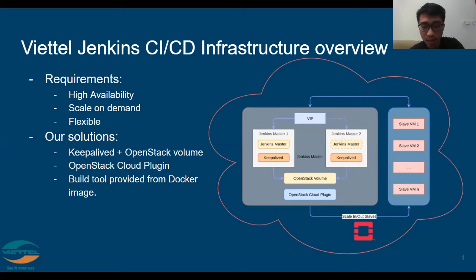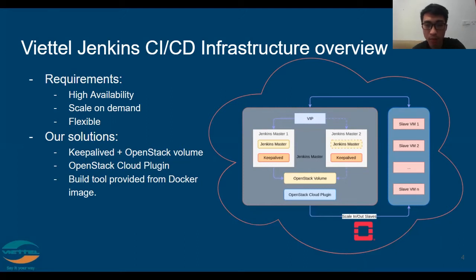The second requirement is scaling on demand. Why do we need this? The answer is that a fixed number of slaves in a Jenkins system is a waste of computing resources during low demand. In contrast, with high demand and more build jobs incoming, the system cannot quickly adapt to all of them. To handle this situation, system engineers must manually prepare servers and join the Jenkins cluster as a slave to increase compute resources.